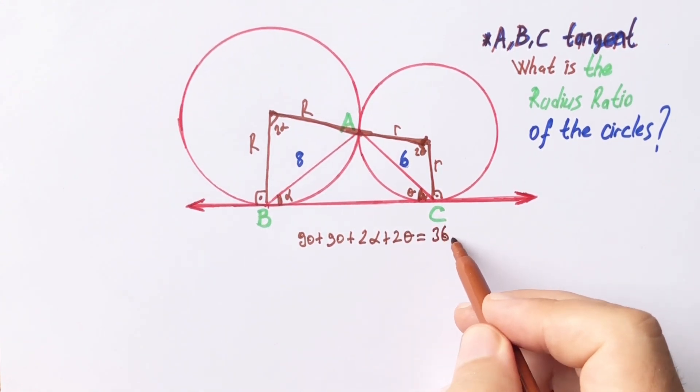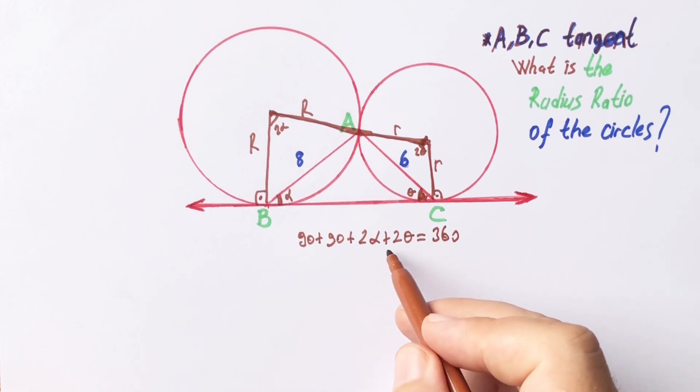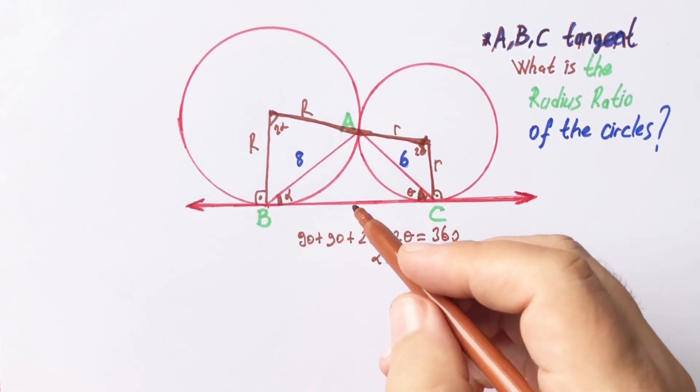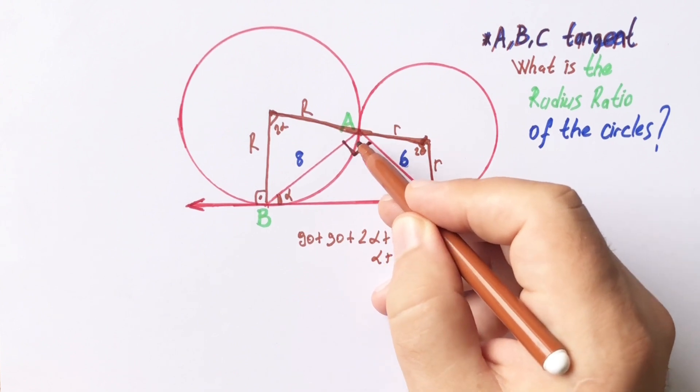Equal 360 degrees. Therefore, alpha plus theta is going to be 90 degrees. So this angle must be 90 degrees.